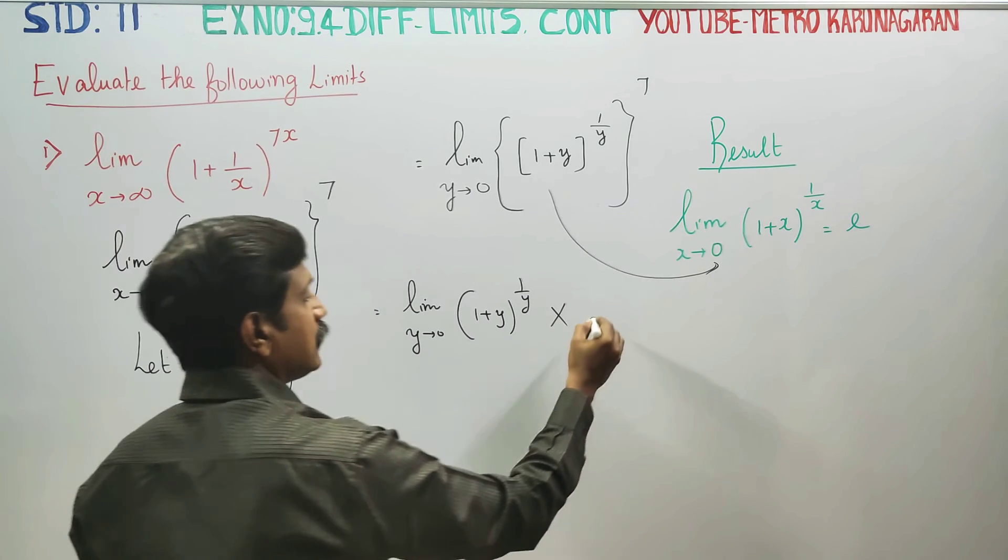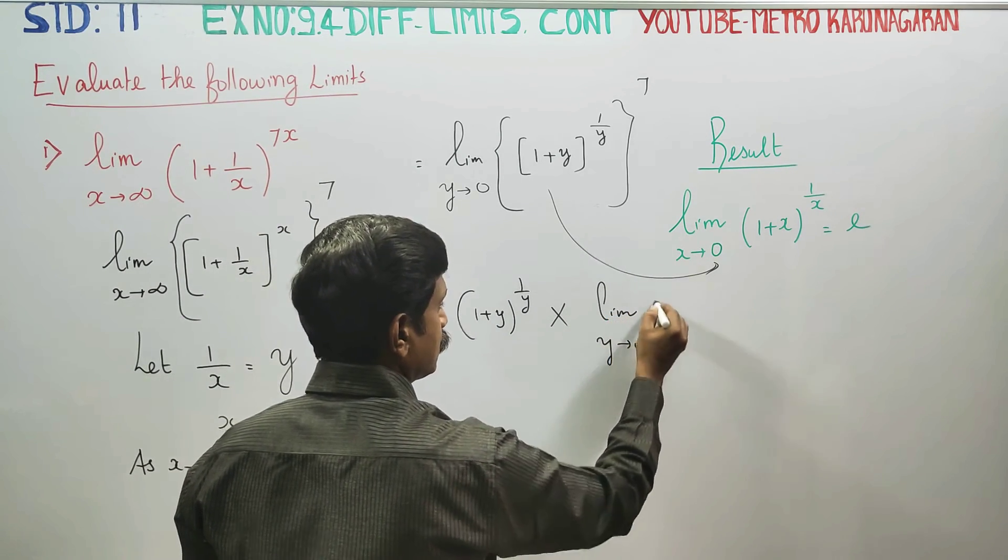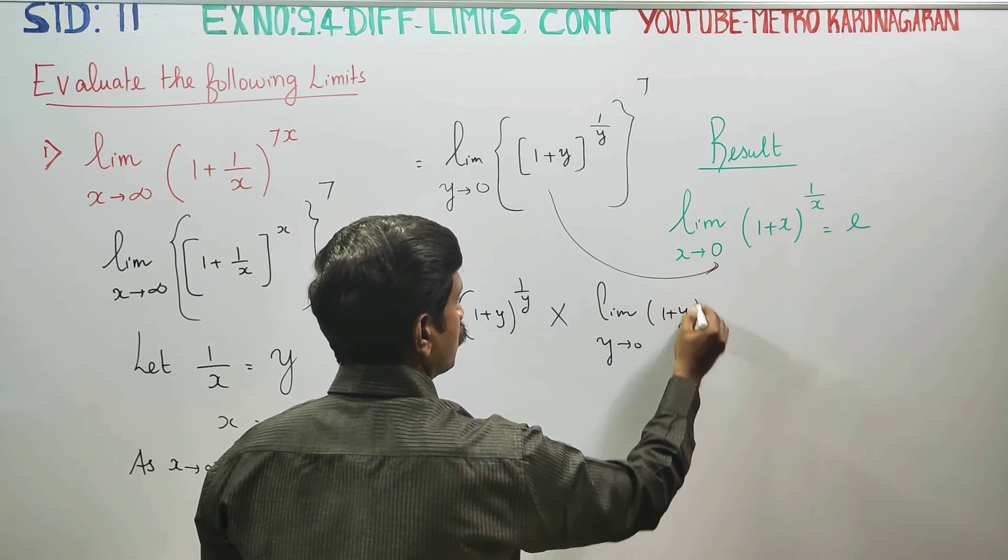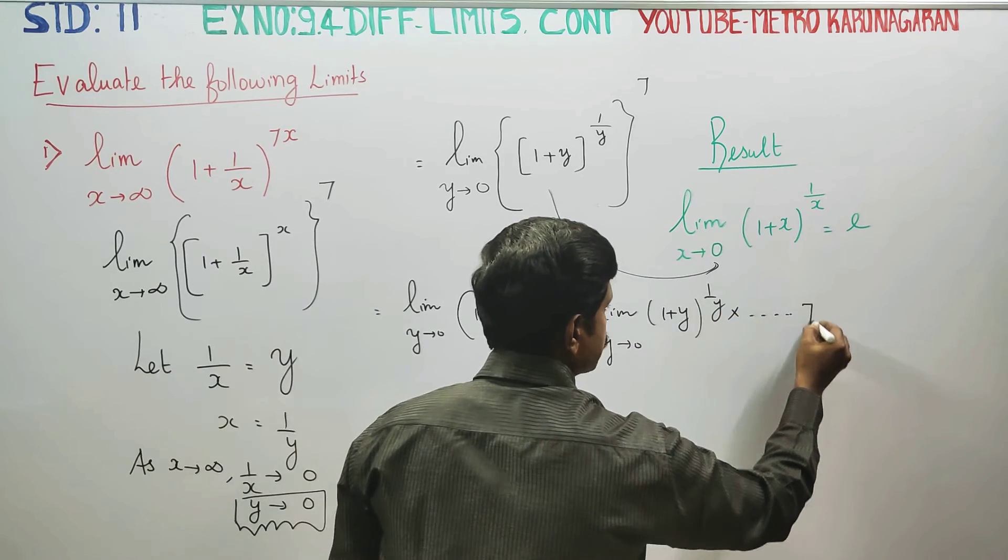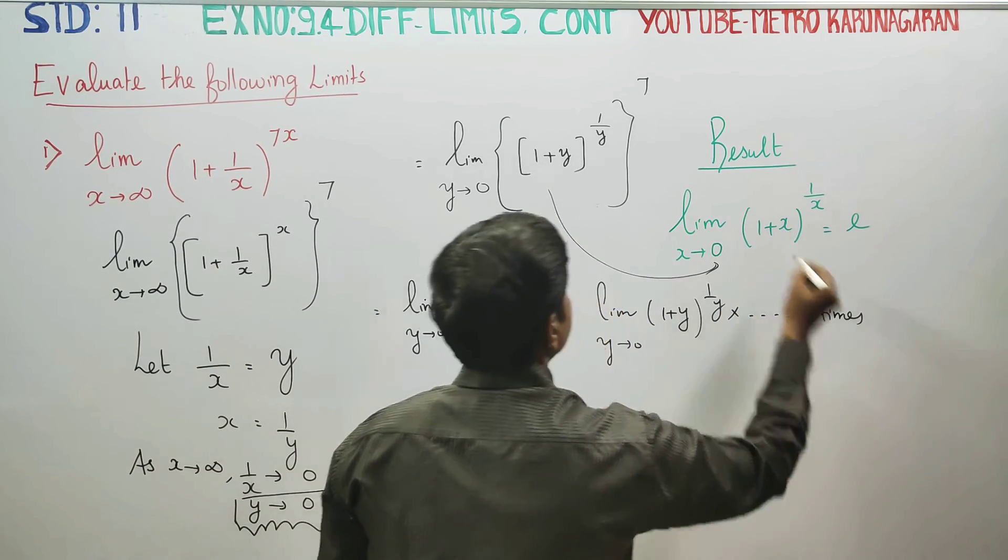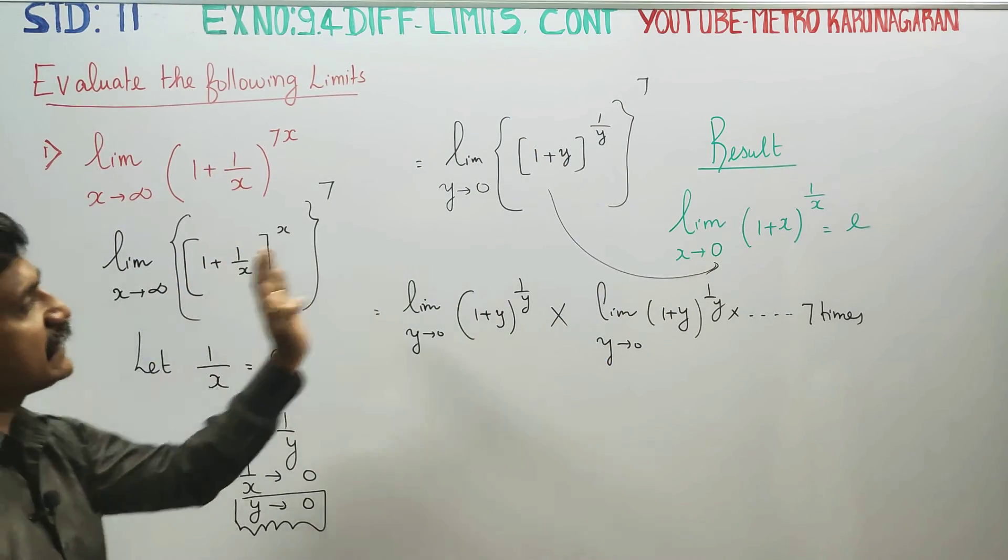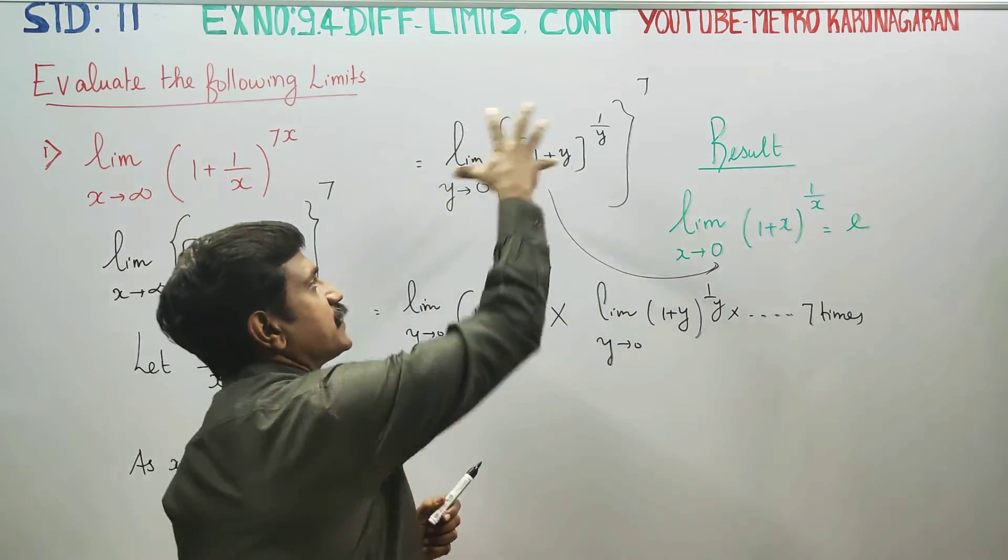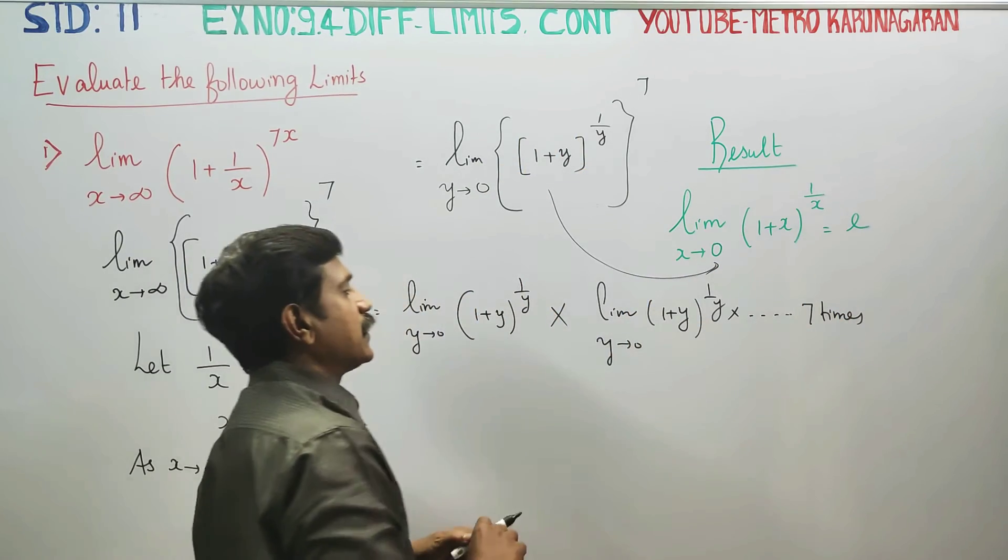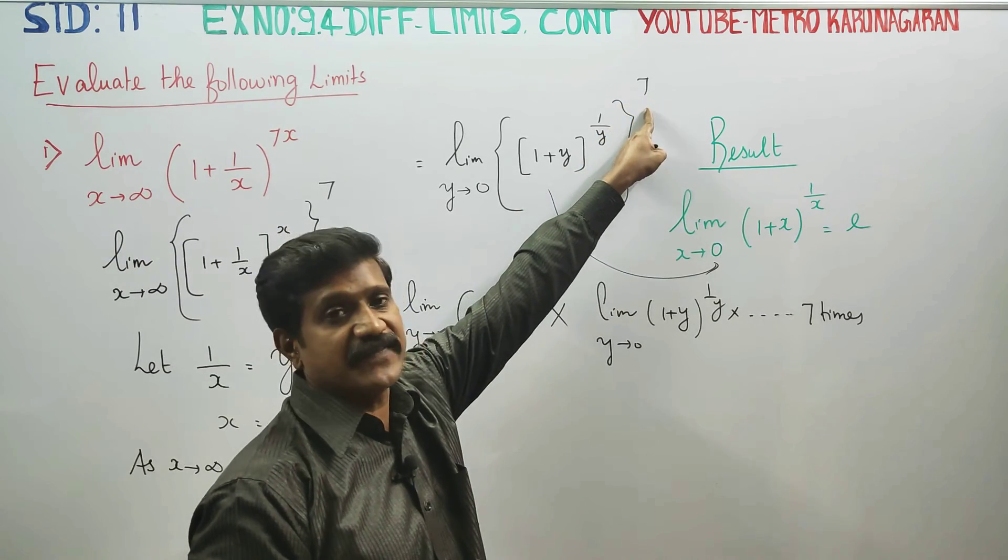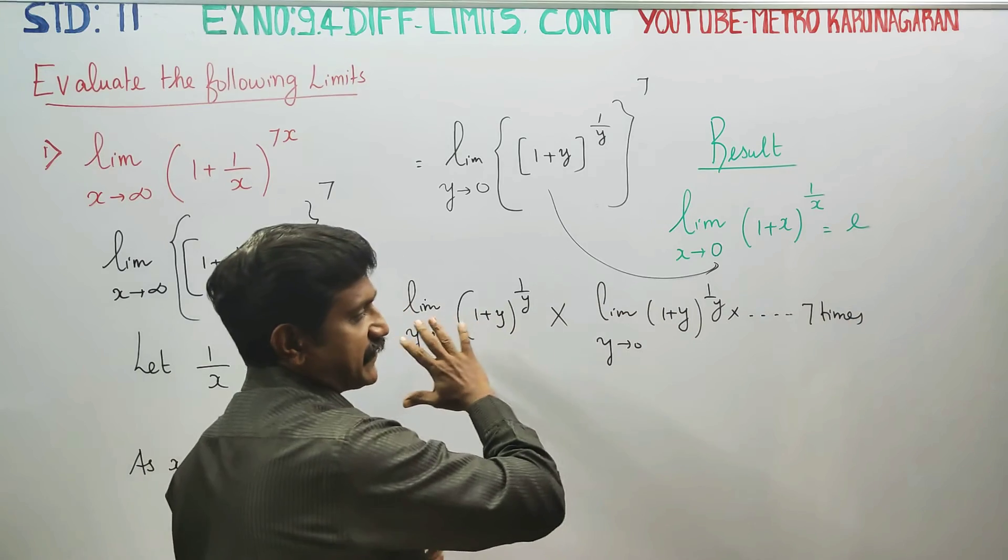Limit y turns to 0, (1 plus y) power 1 by y, into limit - this sum goes on 7 times. In the limiting case, the function repeats 7 times, so power 7 is the same.